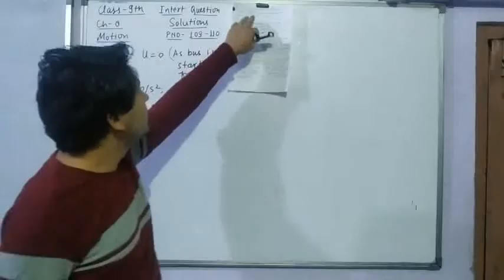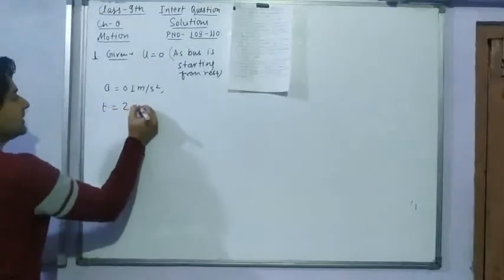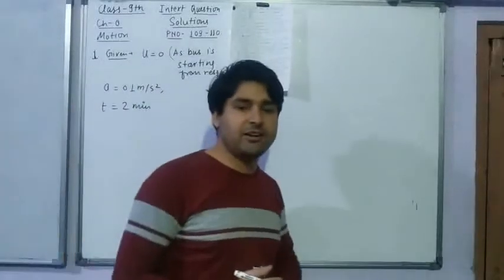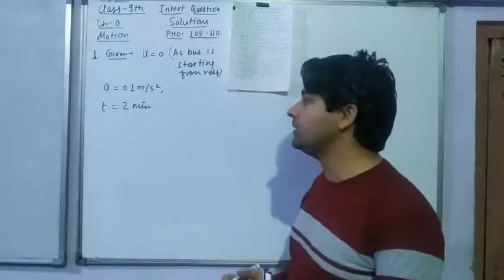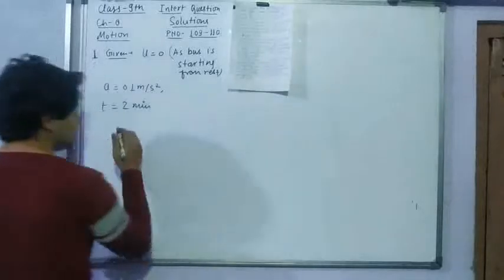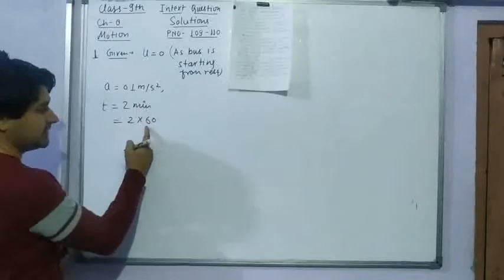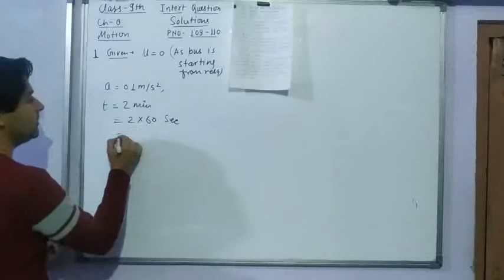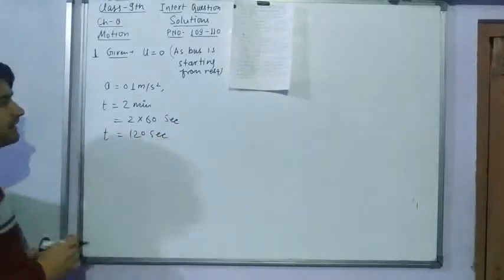The bus moves with uniform acceleration of 0.1 meter per second square. Acceleration a = 0.1 m/s². For 2 minutes, time is given. t = 2 minutes. We have to convert the time whenever it is given in minutes or hours, because we use SI units in equations of motion. So converting this time into seconds: 2 × 60 = 120 seconds.